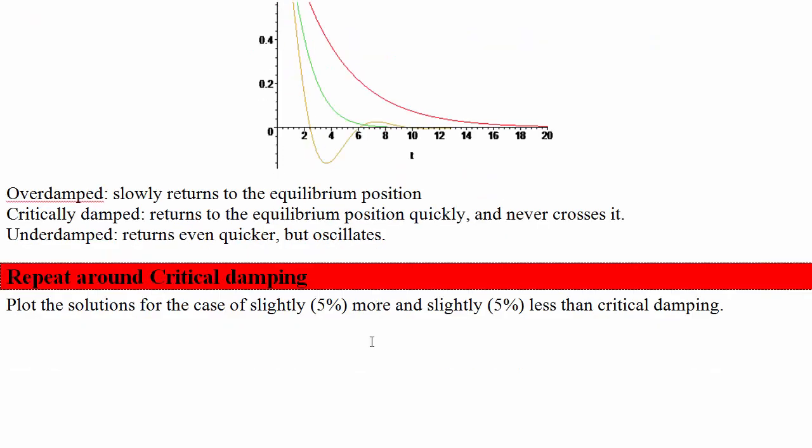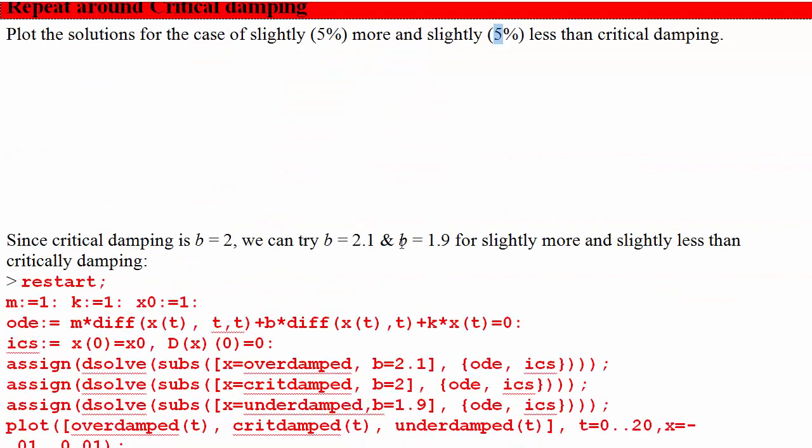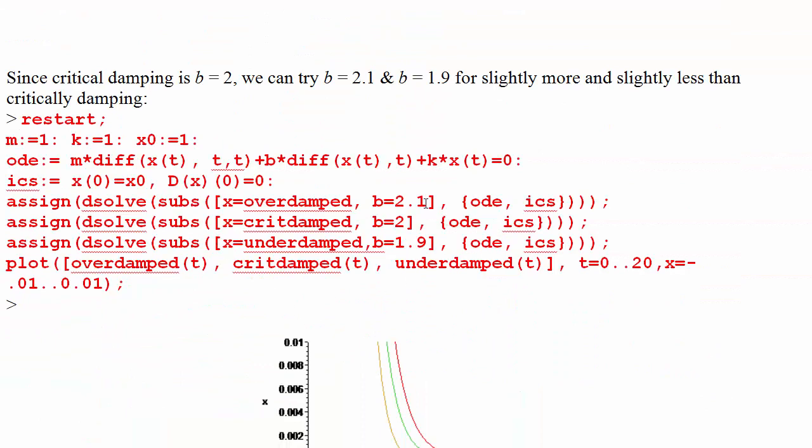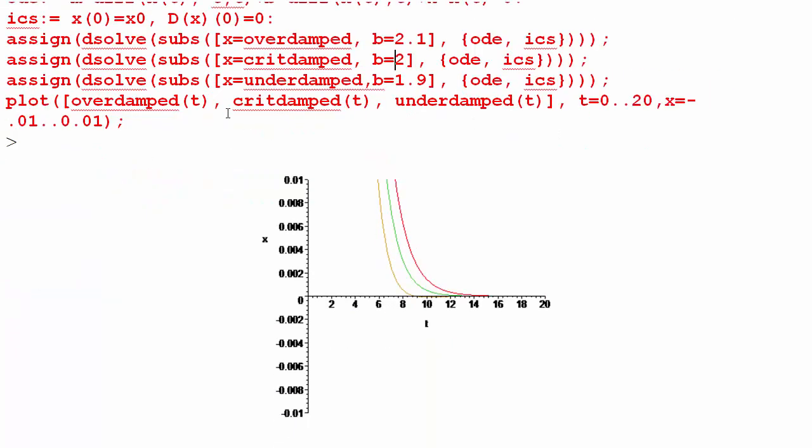Let's find out by repeating around critical damping with just slightly more and slightly less damping to see what happens. Modifying the numbers from the last problem you can just change the b's in the equation and rerun it.